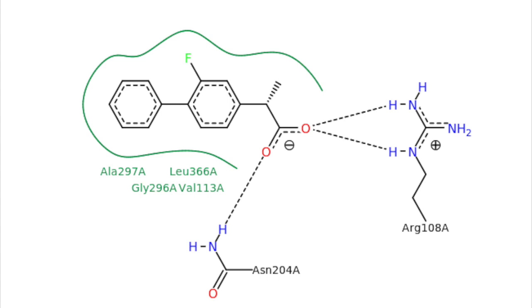experience hydrophobic interactions with alanine 297, leucine 366, glycine 296, and valine 113. This is demonstrated by the solid green line in the picture provided by the protein databank.